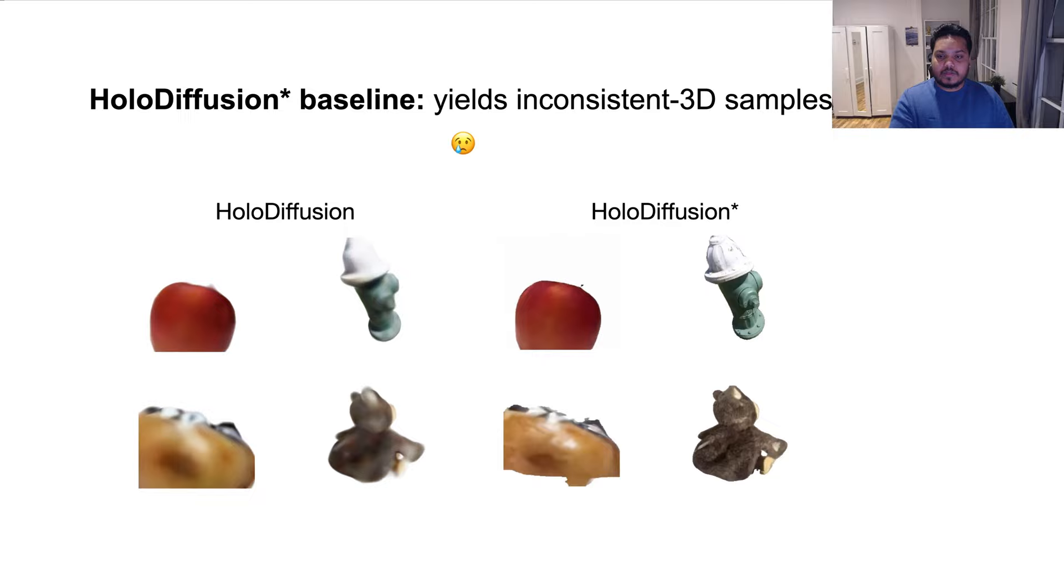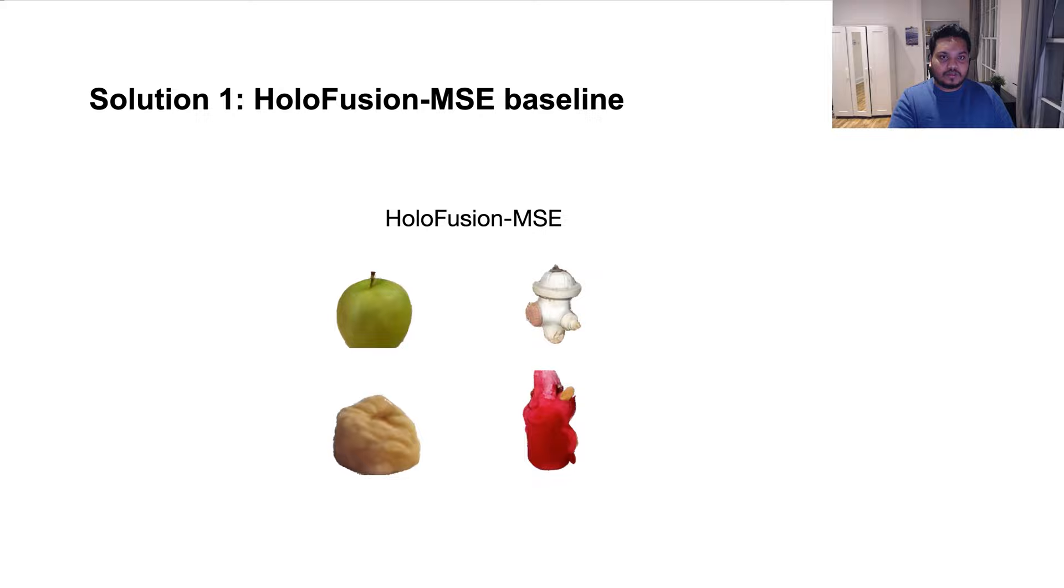As a first solution, we use a number of independently up-sampled views to fit a high resolution feature voxel grid using the mean squared error loss similar to NERF. Although this pacifies the flickering a bit, this solution doesn't get rid of the flickering completely.